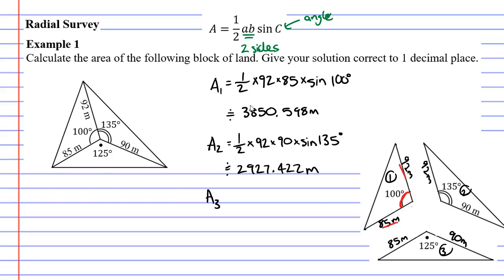Let's do the area of triangle 3. Same process. Half multiplied by the two sides of 85 and 90. And multiply this by sine of my angle 125 degrees.